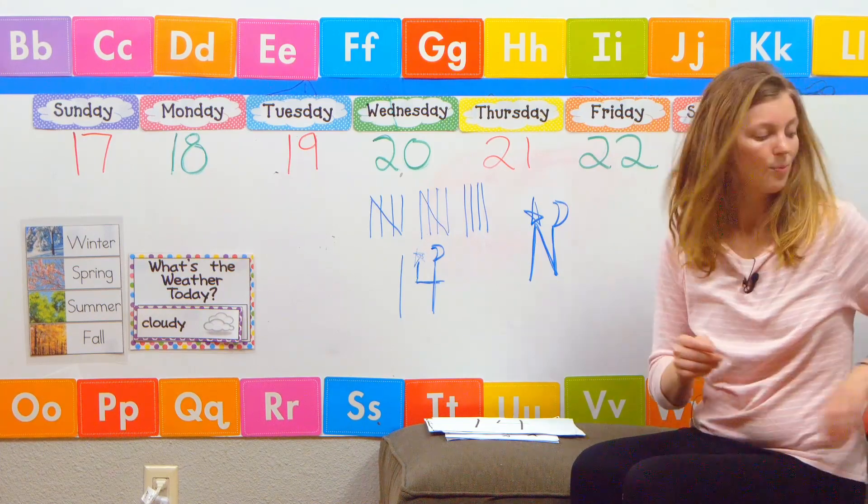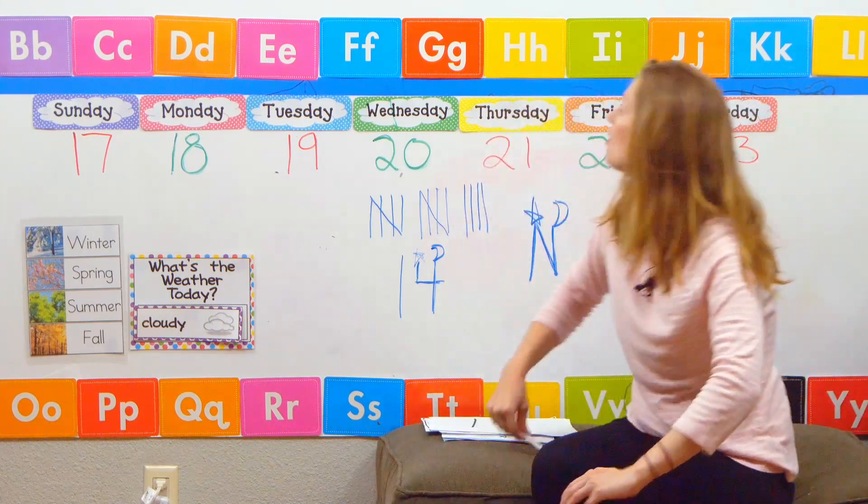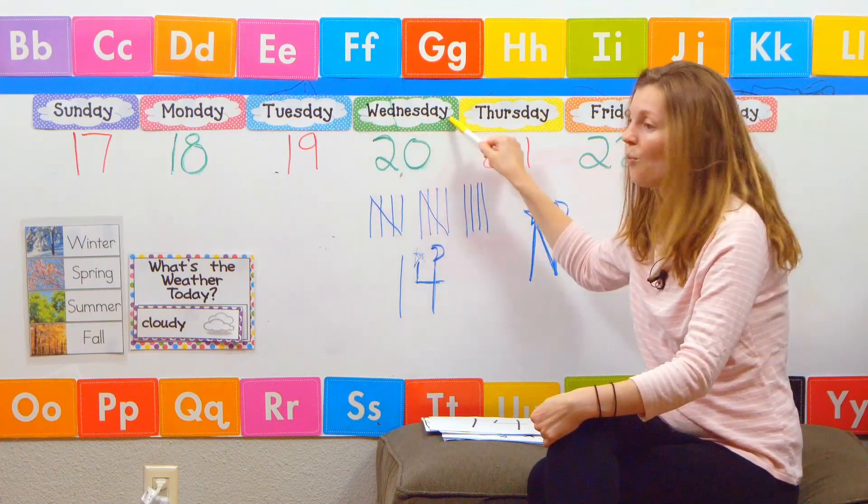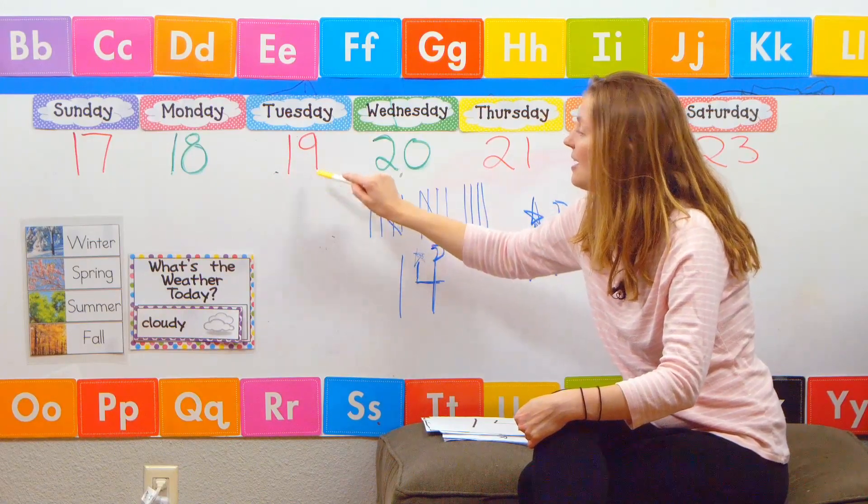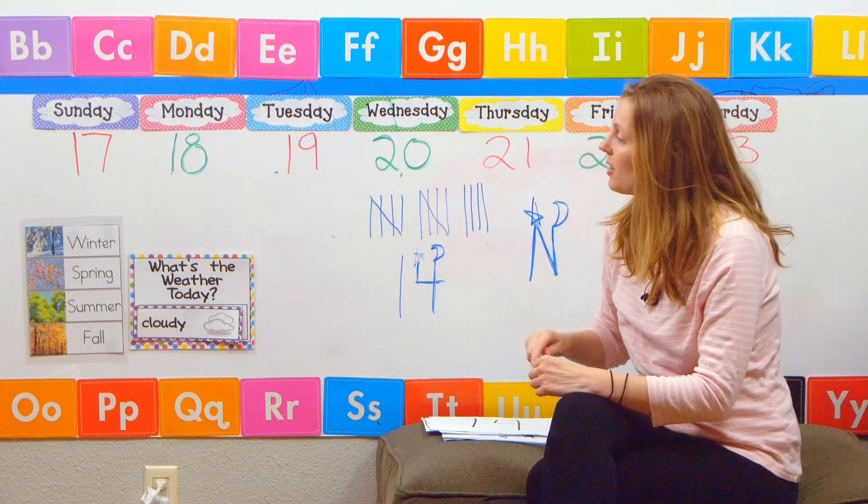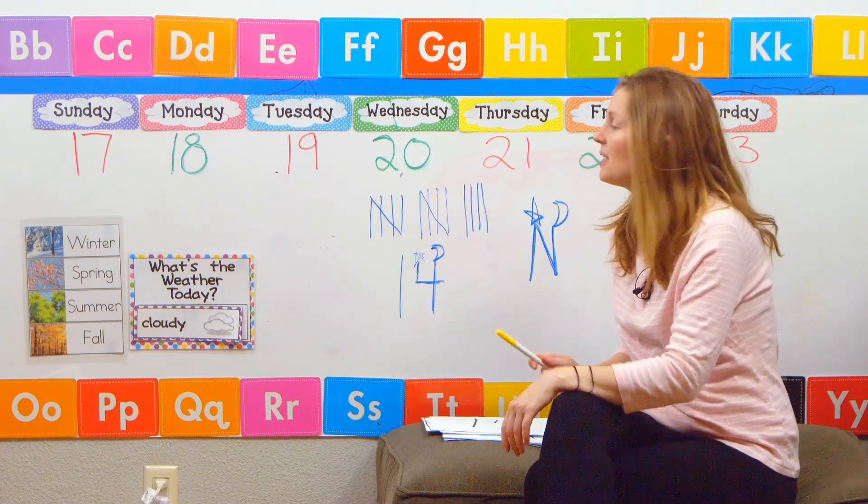I'm going to scooch that over. We are going to talk about the days of the week. So today is Wednesday the 20th. Yesterday was Tuesday the 19th. So we are going to start way down on Sunday and we're going to sing our days of the week song. Here we go.